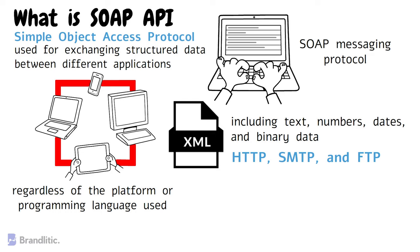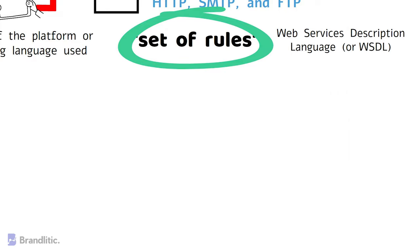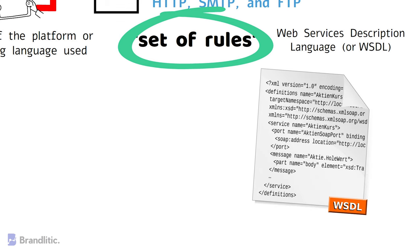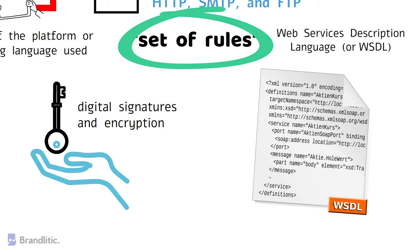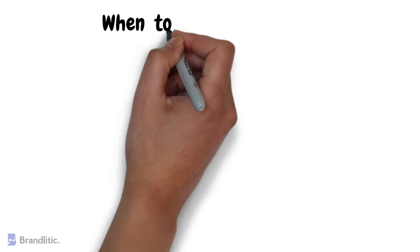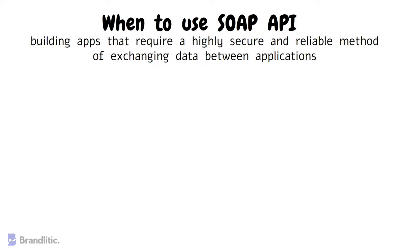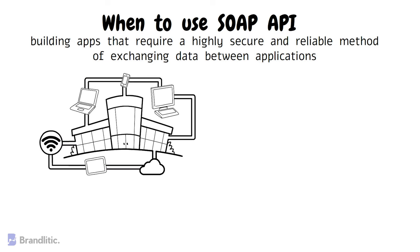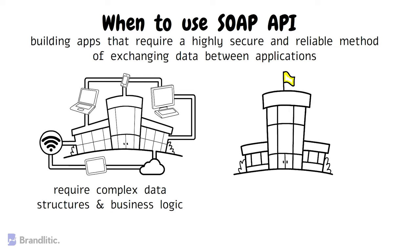One of the essential features of SOAP API is its ability to define a set of rules for exchanging messages between applications. These rules are defined in the Web Services Description Language, or WSDL, which specifies the format of the SOAP message and the operations that can be performed on it. SOAP API also supports advanced security mechanisms including digital signatures and encryption, ensuring that data exchanged between applications is secure and cannot be accessed by unauthorized users. SOAP API is an excellent choice for enterprise-level applications that require a highly secure and reliable method for exchanging data, and it is ideal for applications that require complex data structures, business logic, and advanced security features.